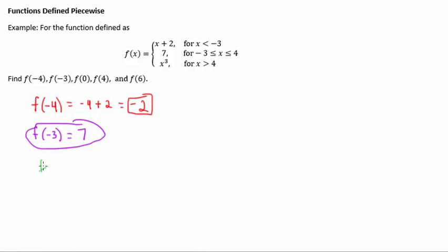We're finding f of 0, which 0 is between negative 3 and 4, so that's 7. And then we're supposed to do f of positive 4. And again, it's not greater than 4, it's less than or equal to 4. So, f of 4 is also 7.